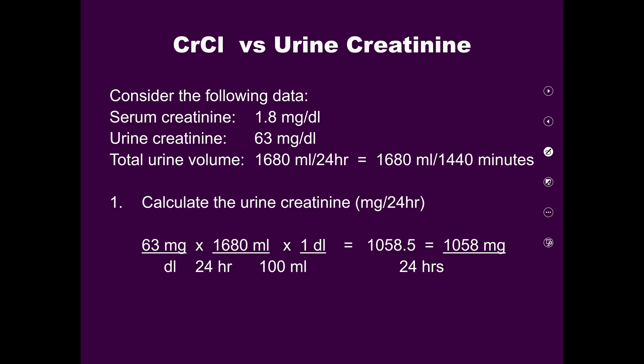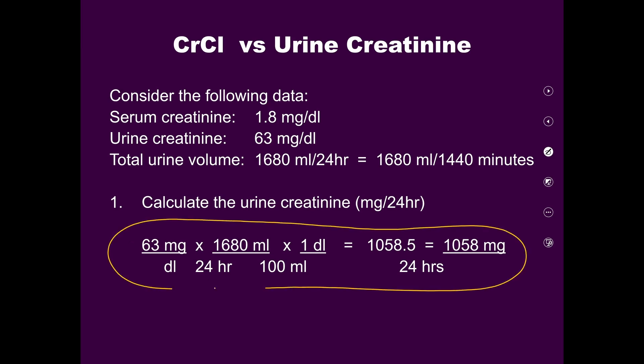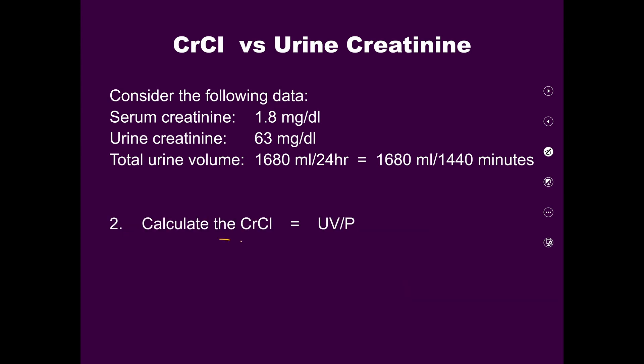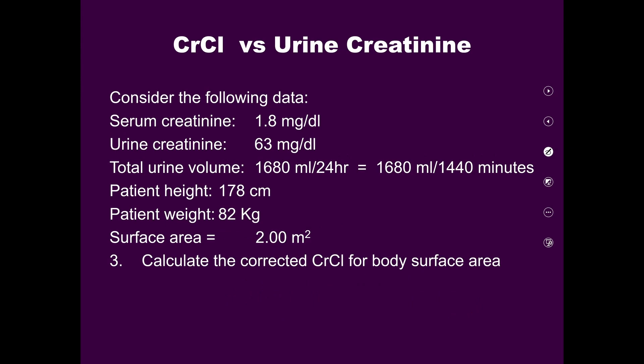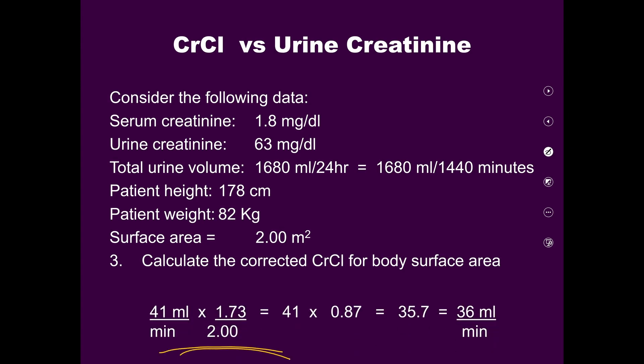For the sample calculation: urine creatinine is 63 mg/dL, total urine volume is 1680 ml per 24 hours, and serum creatinine is 1.8 mg/dL. First calculate the urine creatinine in mg per 24 hours, then calculate creatinine clearance using U × V / P. The volume per minute is 1680 divided by 1440, divided by 1.8. The result is approximately 41 ml per minute. This is the creatinine clearance, which can then be adjusted for body surface area.